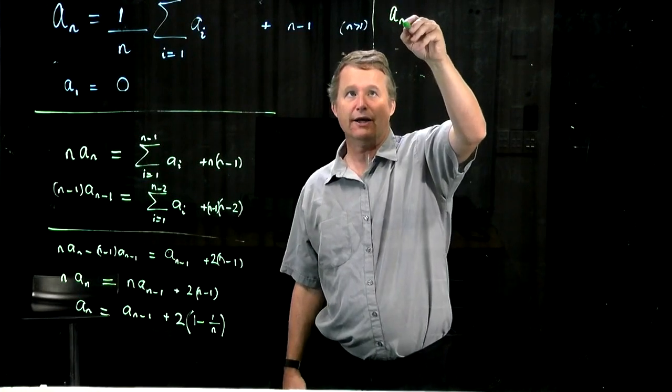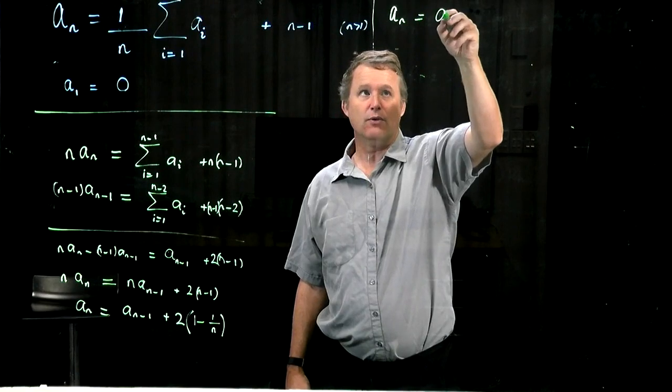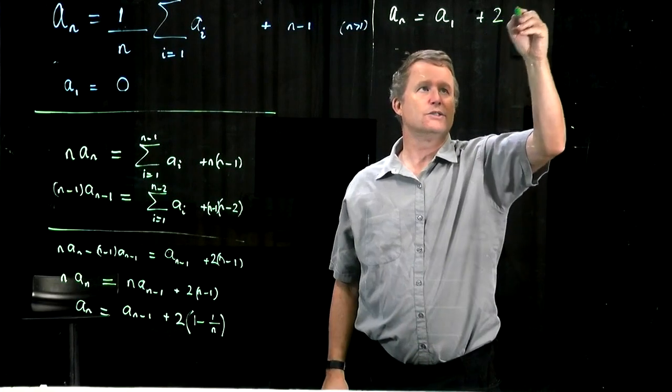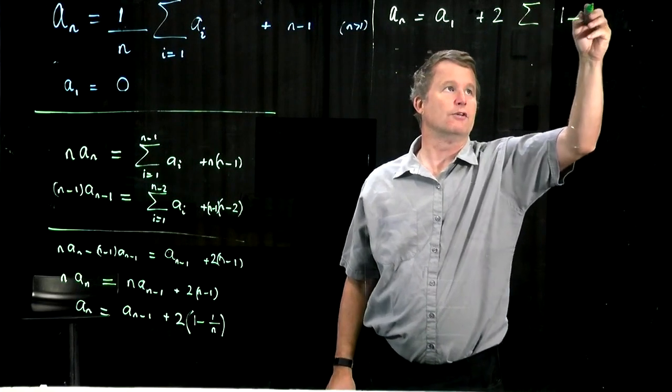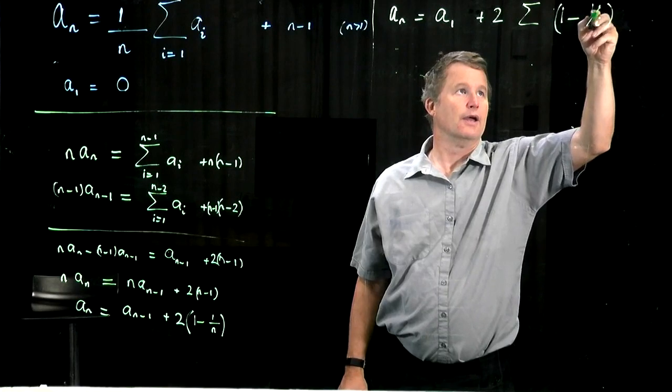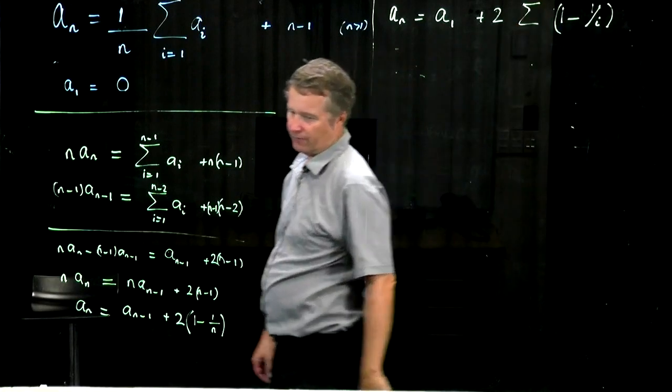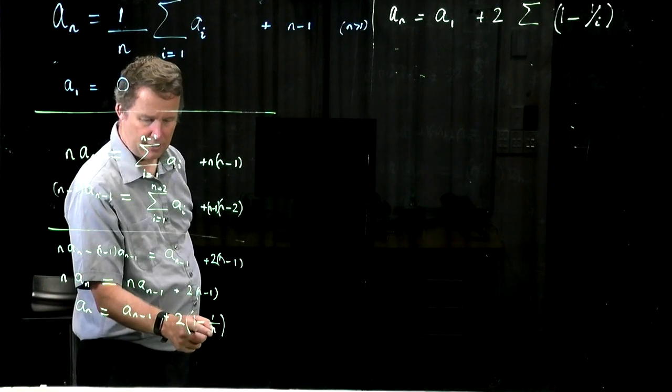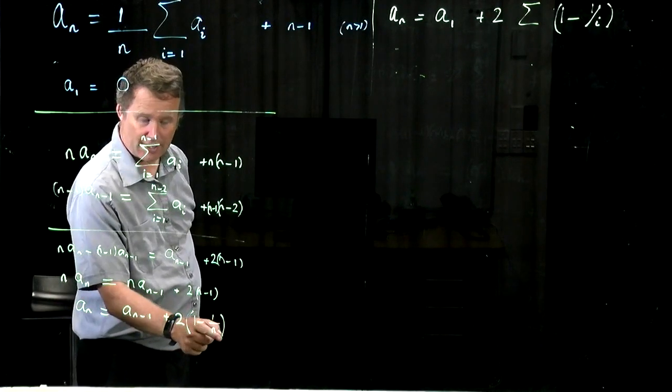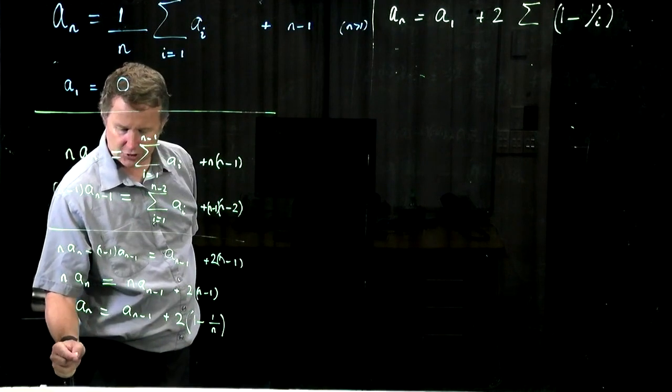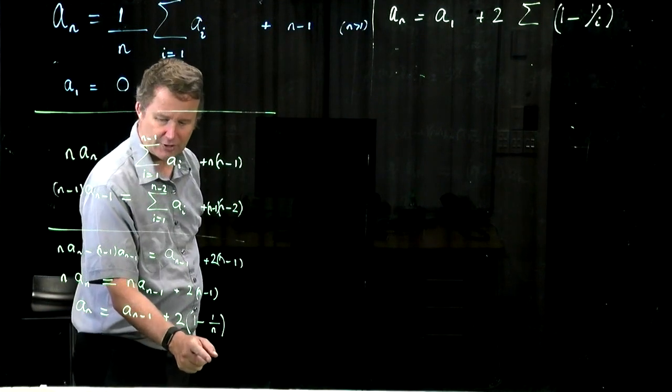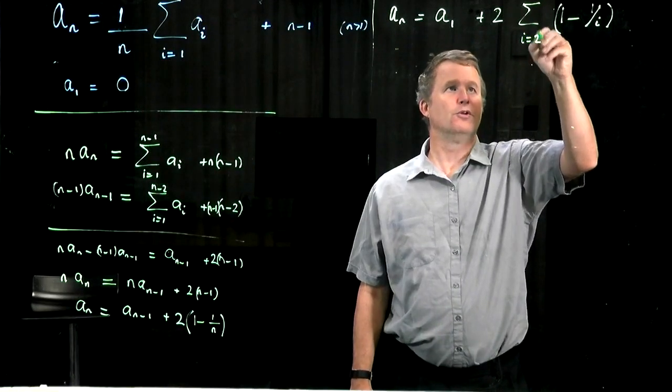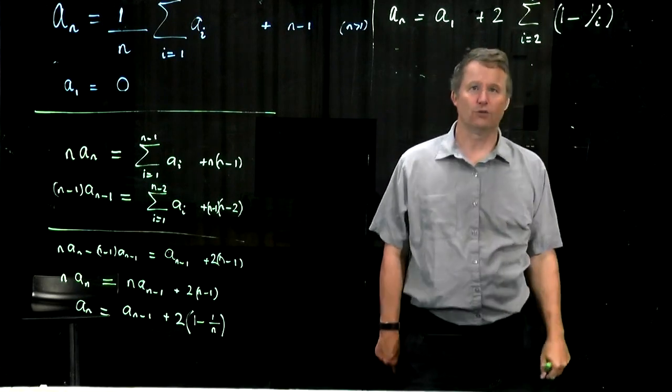and we're going to get a_n is equal to a_1, which is going to end up being 0 anyway, plus twice a sum of something involving 1 minus 1 over i, and i goes from somewhere to somewhere. Well, the first term has got an n in it, corresponds to that. Next one will have an n minus 1, and we'll get down, the last term will be a_2 is a_1, and we'll have a 2 in it, right? So it's going to be the sum from 2 to n of 1 minus 1 over i.